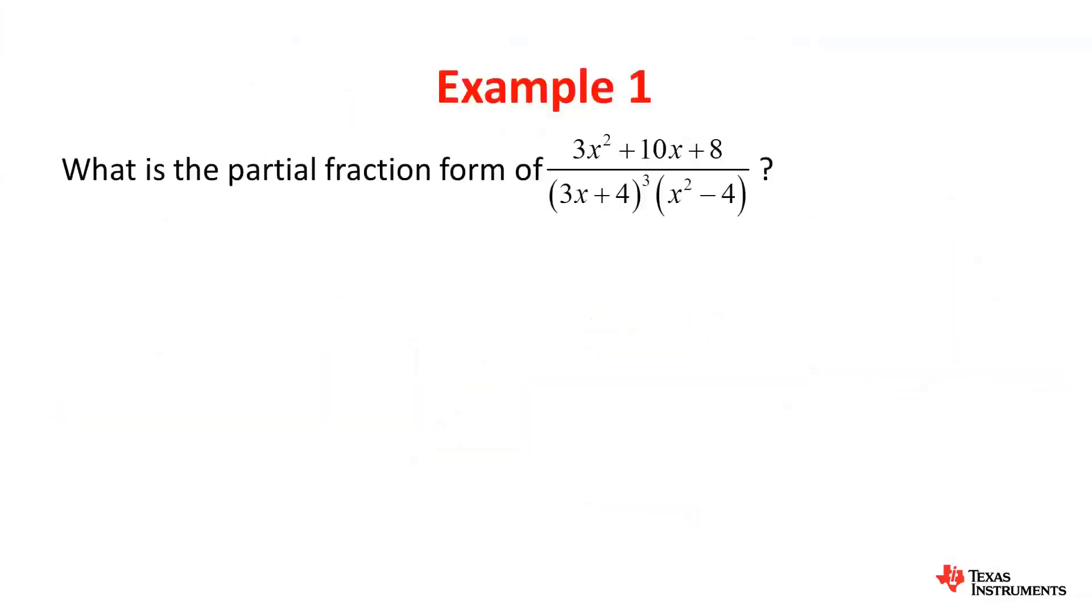To start with our first example, let's find the partial fraction form of 3x squared plus 10x plus 8, all over 3x plus 4 cubed times x squared minus 4.